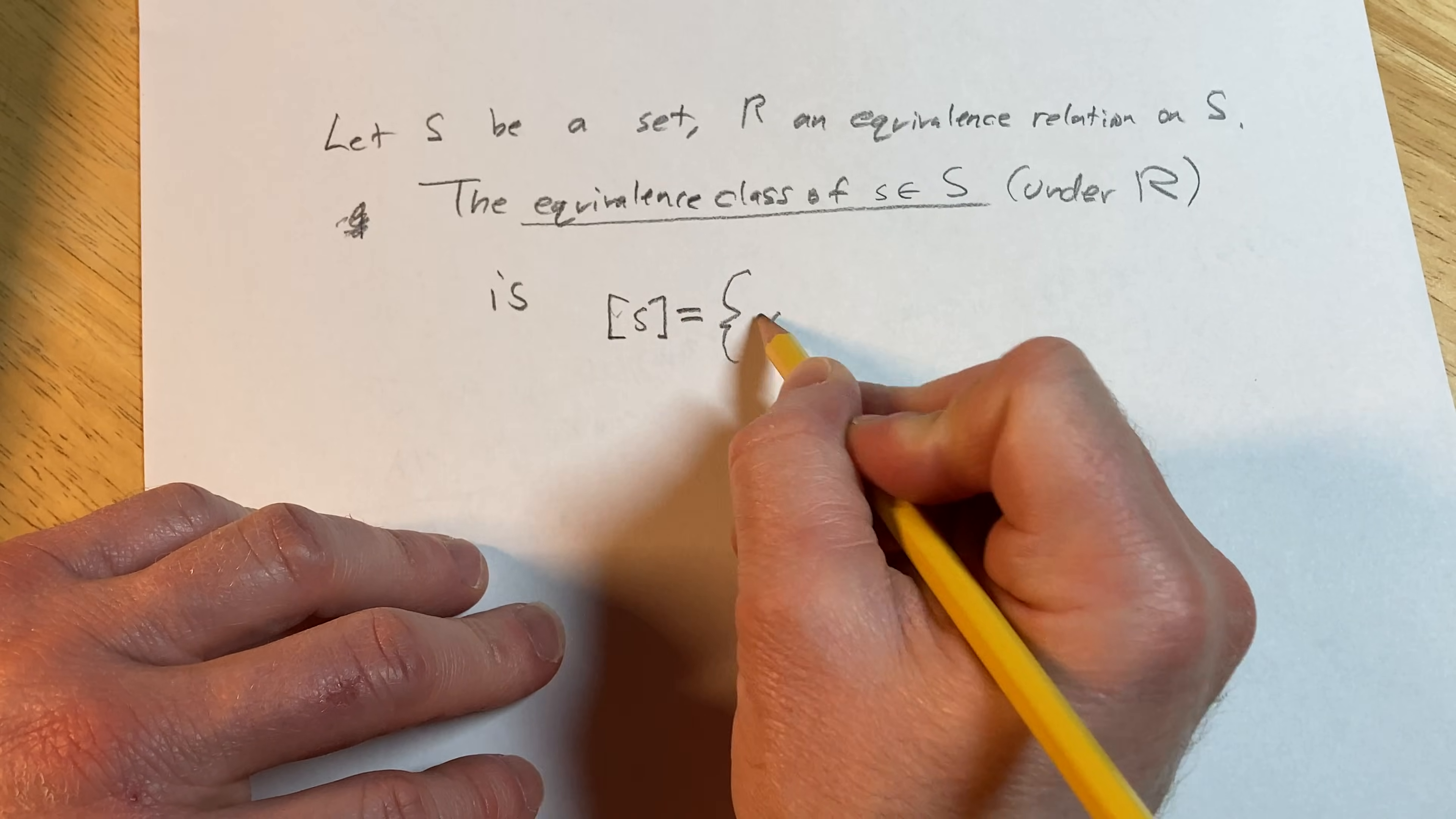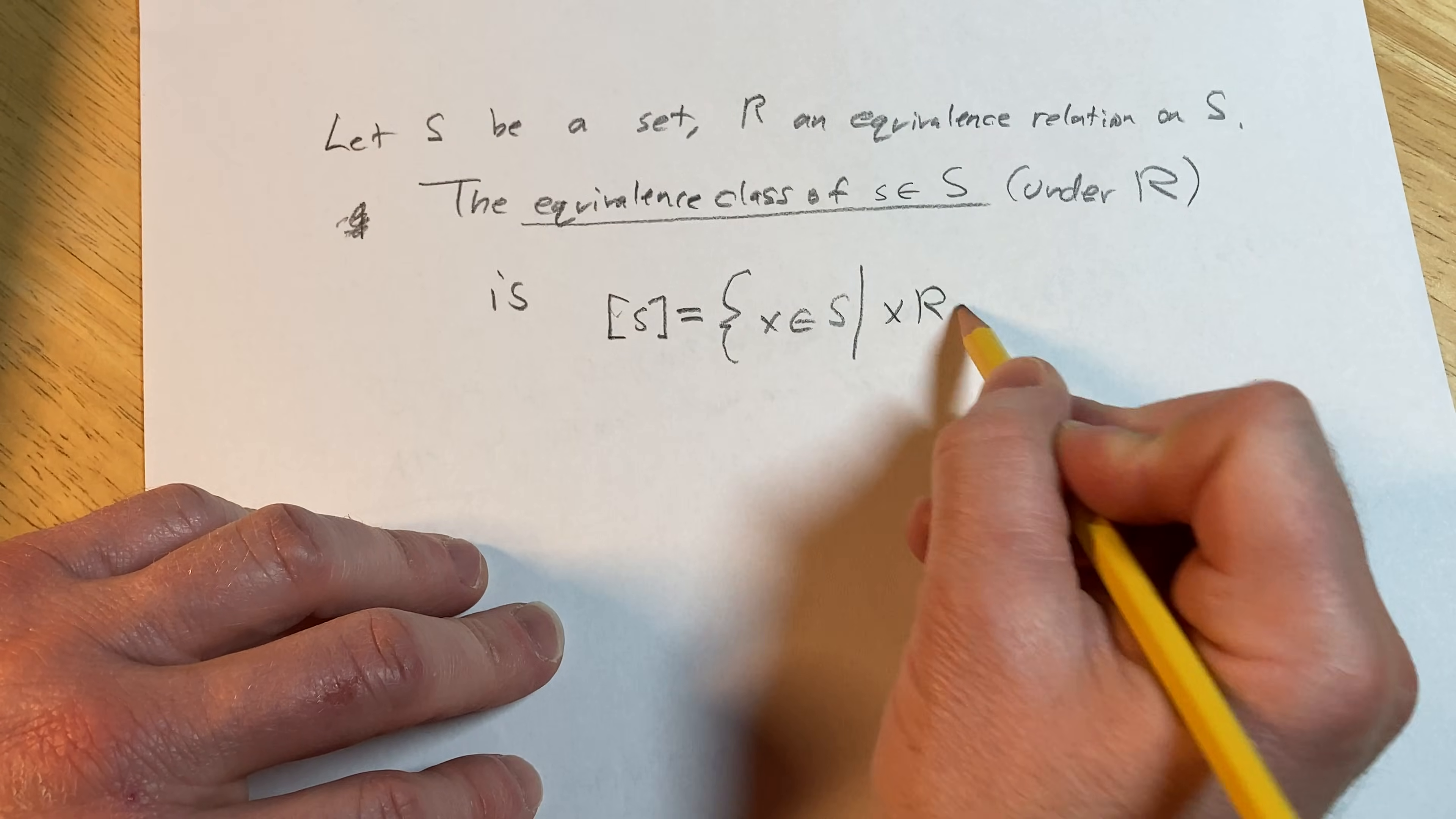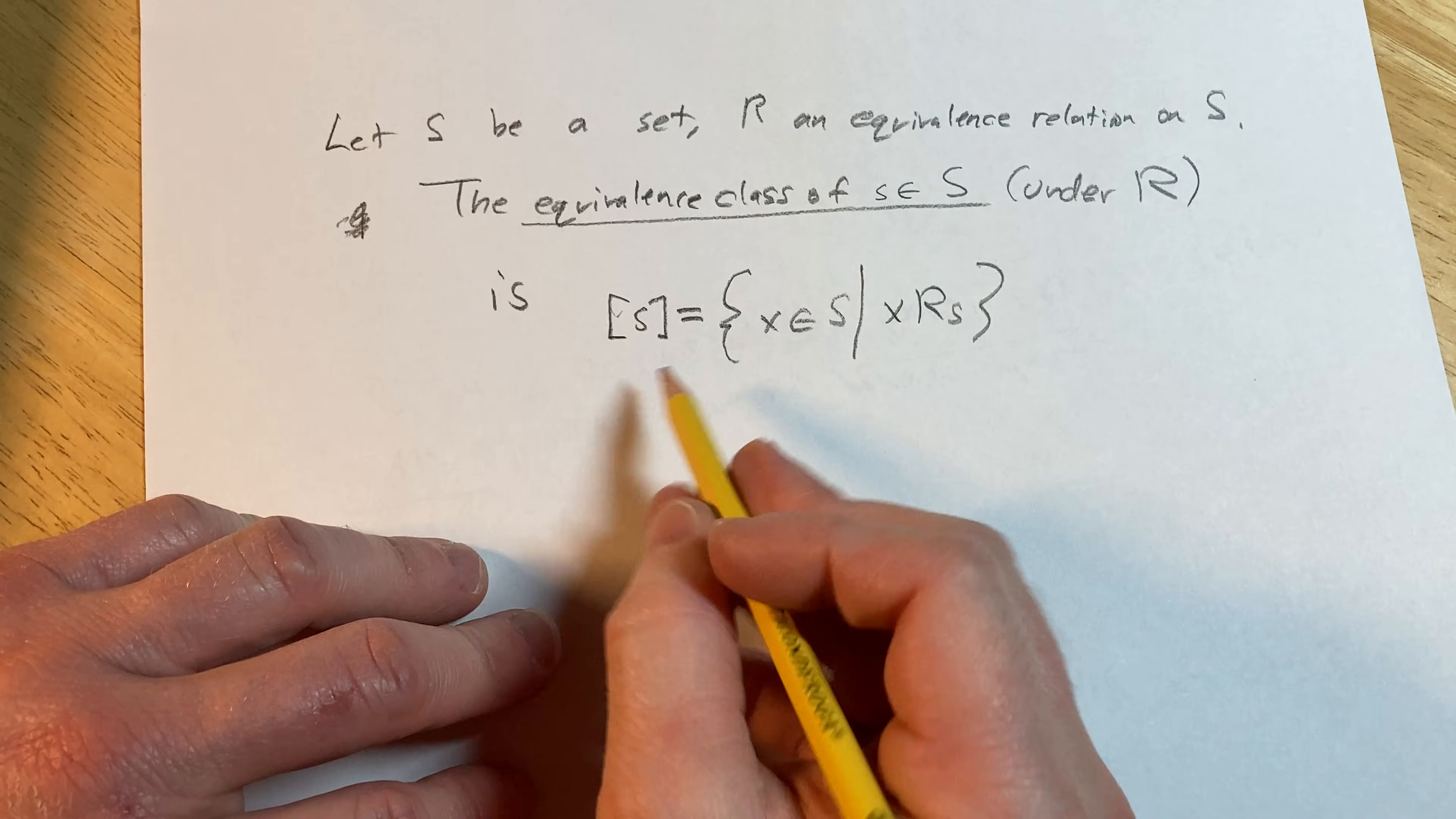This is equal to the set of all x in S such that x is related to s. Other notation is like s with a bar over it.